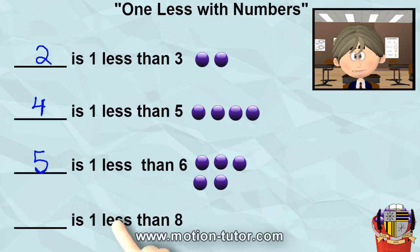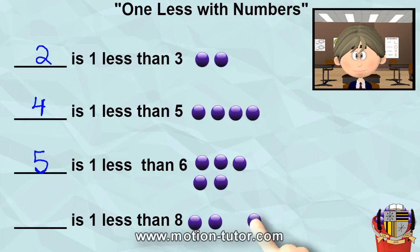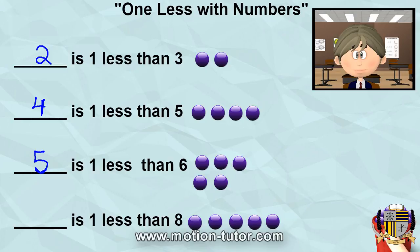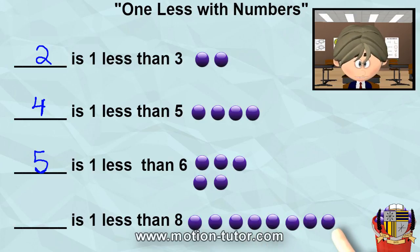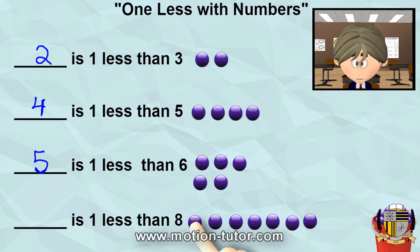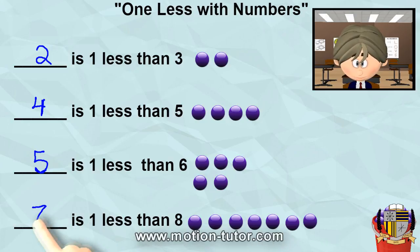This last example: something is one less than eight. Let's try and get eight — one, two, three, four, five, six, seven, and eight. So this is eight. Something is one less than eight, so we just get rid of one of them. And what are we left with? One, two, three, four, five, six, seven. So that means seven is one less than eight.